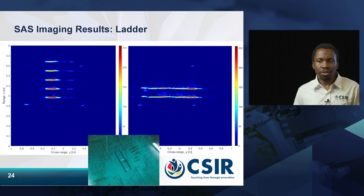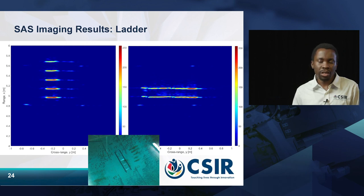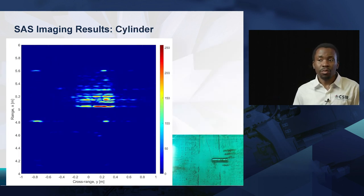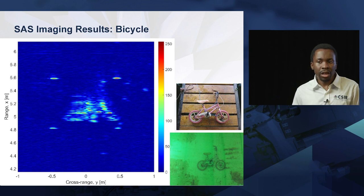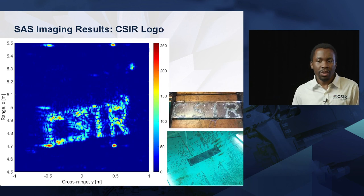I'll run through some of the imaging results obtained so far. Starting with simple objects: we have a five-rung ladder immersed in water — you can see the five rungs, though the verticals are barely visible due to specular reflection and some ghost images due to uncompensated motion, as well as multipath returns. We've also imaged a cylinder, and you can see multipath returns there. We've also imaged a pool leaf rake, and you can see the outline with the vertical showing. We imaged a bicycle to demonstrate high resolution — you can pick out the outline — and we also imaged the CSIR logo made out of marble stuck onto a sheet of metal.